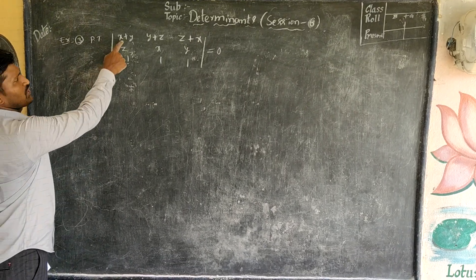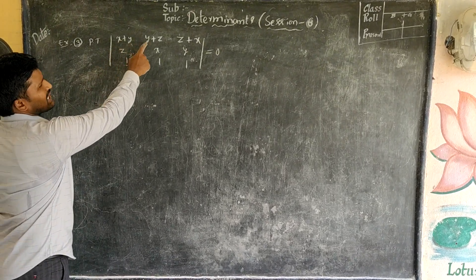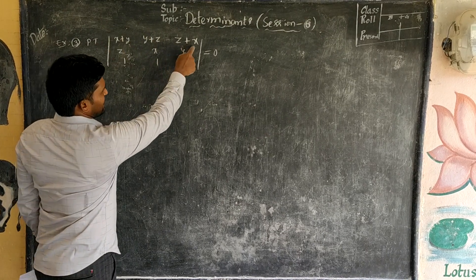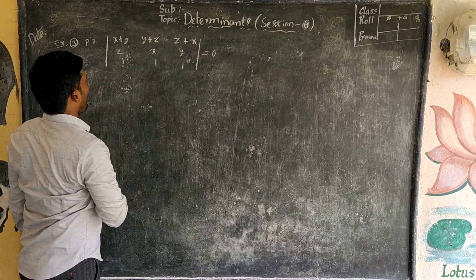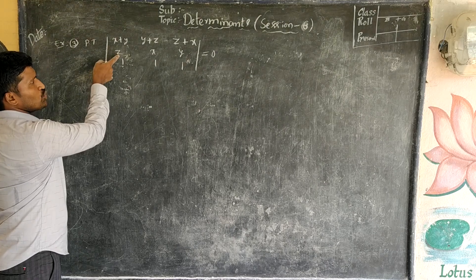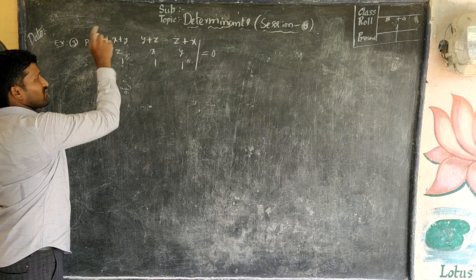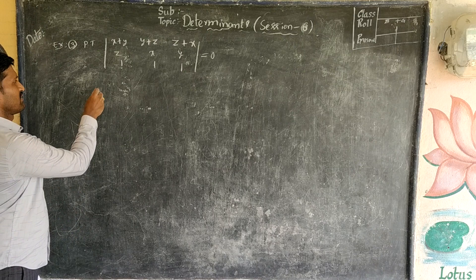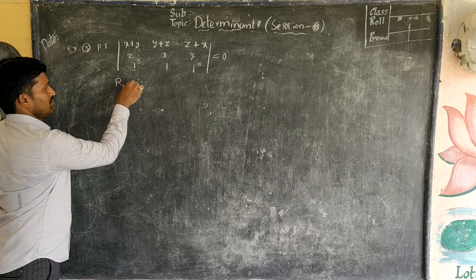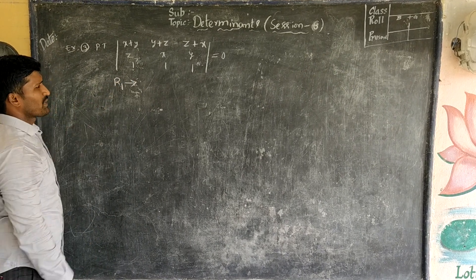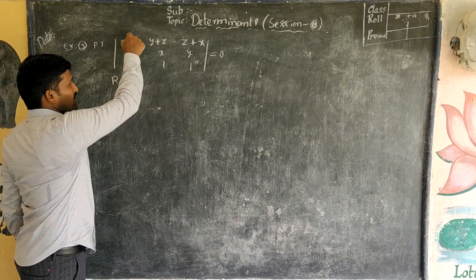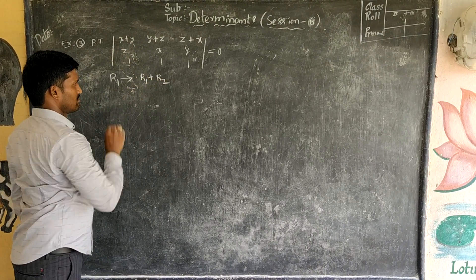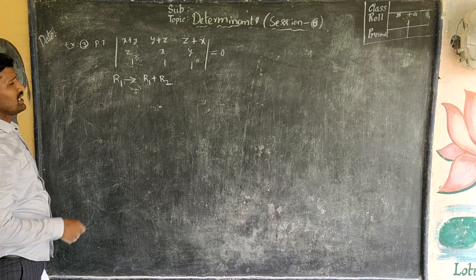Clearly observe: in the first row, x and y are present but z is not. In the second row, y, z but x is not there. In the third row, z and x but y is not there. If we add R2 to R1, in every element we will get x+y+z. That's why I am applying this operation: R1 plus R2.